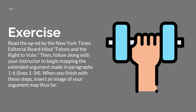Let's go ahead and get into our first exercise. You're going to read the op-ed by the New York Times editorial board titled 'Felons and the Right to Vote.' Then you're going to follow along with me in this video to begin mapping an extended argument that the writers make in paragraphs one through six. When you're finished with your argument map, insert an image of what you've created into your notes. Pause the video to read the text first, then unpause and follow along with me.